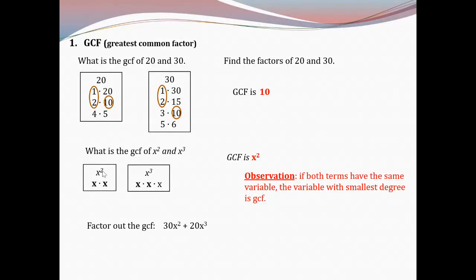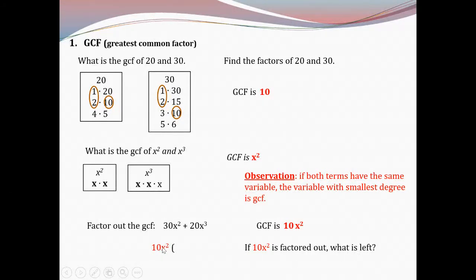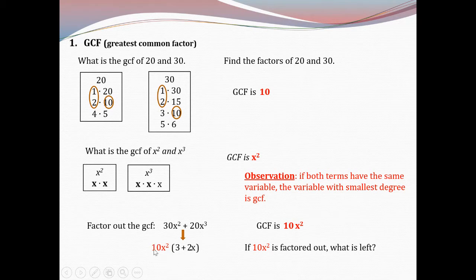Factor out the GCF from 30X² + 20X³. The GCF of the numbers — 30 and 20 — was 10, and the GCF of the variables X² and X³ is X². So I factor out 10X². What's left? 10X² × 3 gives 30X², and 10X² × 2X gives 20X³. So the factored form is 10X²(3 + 2X). You can always check your work by distributing.